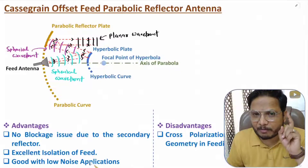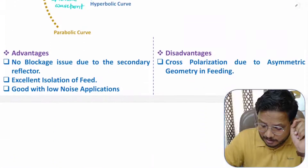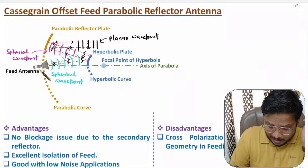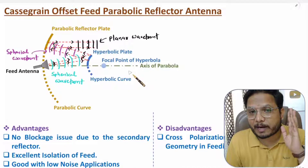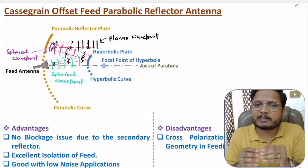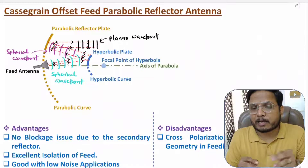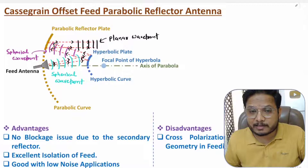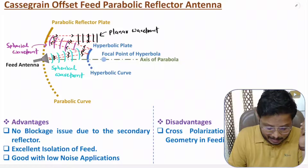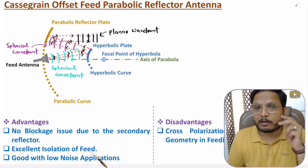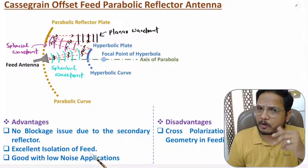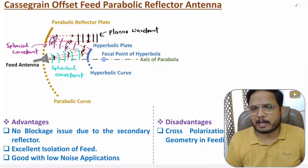It is also good with low noise applications. However, one disadvantage that is added is cross polarization, because this geometry is not symmetric with respect to the axis of parabola. When the geometry is asymmetric, there is an issue of cross polarization. But this design is very effective in other ways: there is no blockage, there is excellent isolation of the feed, and it is good with low noise applications, though cross polarization is present.